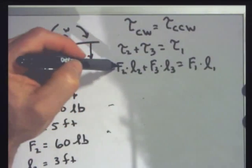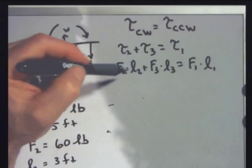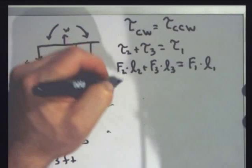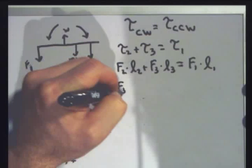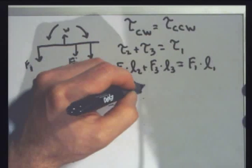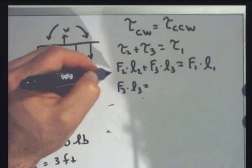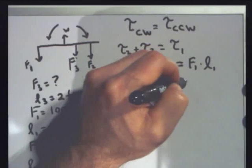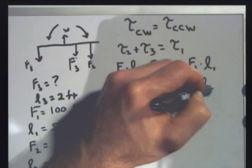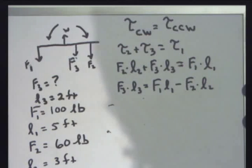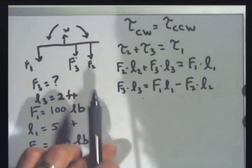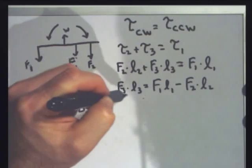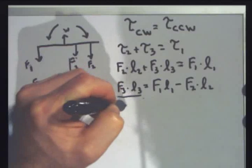First off, I need to get rid of F2 and L2. So I'll subtract that from both sides. As long as I do the same thing to both sides, this equal sign will still be valid. So I'll say F3 times L3. See, I subtract F2, L2 from both sides. I get F1, L1 minus F2, L2. Good. OK, I'm almost there. Now, I don't have F3 by itself yet. I've still got this moment arm, L3, with it. So I'll divide both sides by L3.